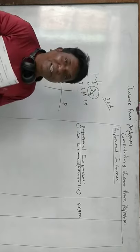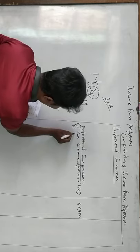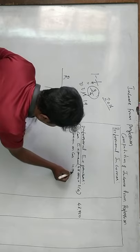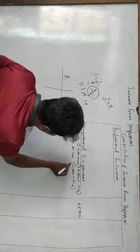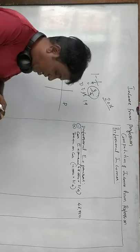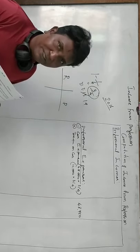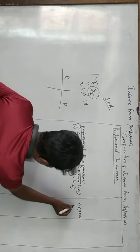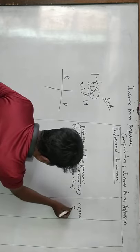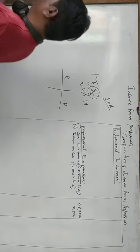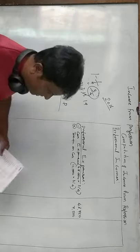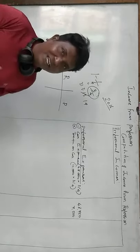Depreciation on car rupees 10,000. Depreciation on car. On car, 10,000, three-fourth profit, is 7,500. Depreciation on car. Second adjustment.